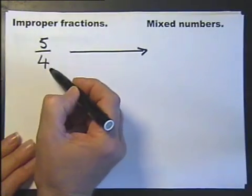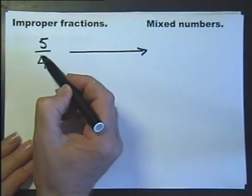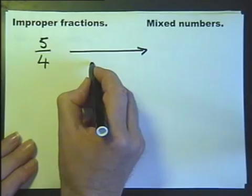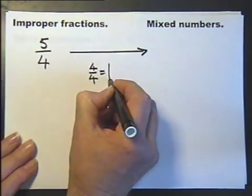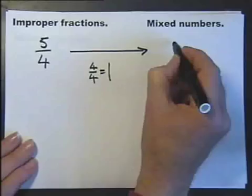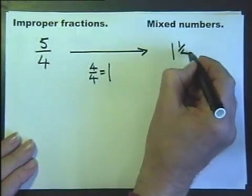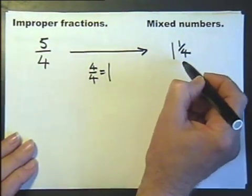A mixed number has a whole part and a fraction part. So let's look at this again. This is actually saying 5 quarters. Now if we think about it, 4 quarters equals 1. So 5 quarters must be 1 and 1 quarter. And there we have our mixed number.